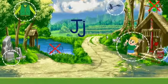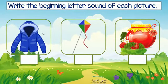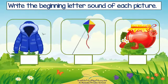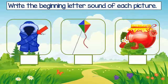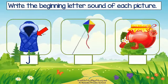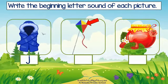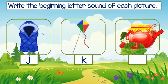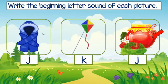Great job! Are you ready to answer this activity? Great, let's start. Write the beginning letter sound of each picture. The first picture is J-J-jacket — letter J. K-K-kite — letter K. J-J-jam — letter J. Well done!